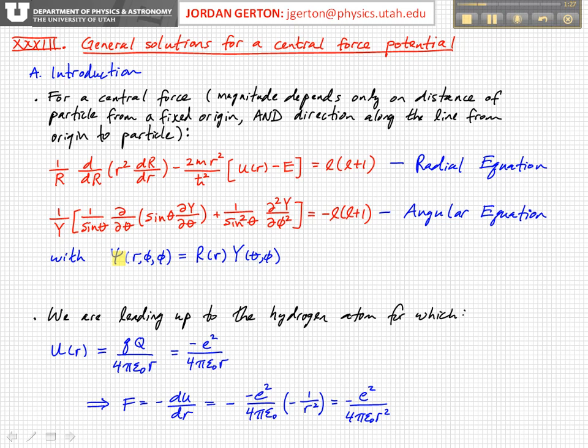If we write the wave function, which is a function of R, theta, and phi, as a product of R of R and Y, which is a function of theta and phi, then we can write the Schrodinger equation like this. So we have these two different equations, one which only involves R, and we call that the radial equation, one which involves theta and phi, which we call the angular equation.